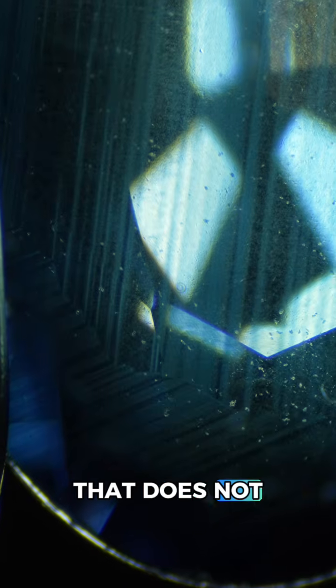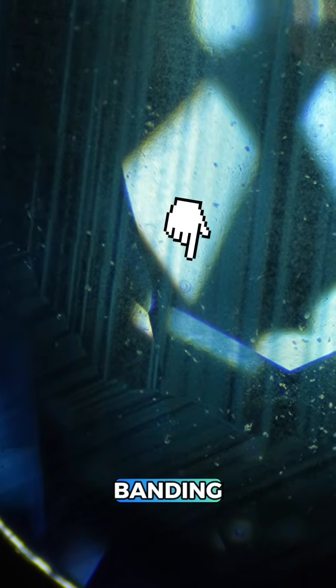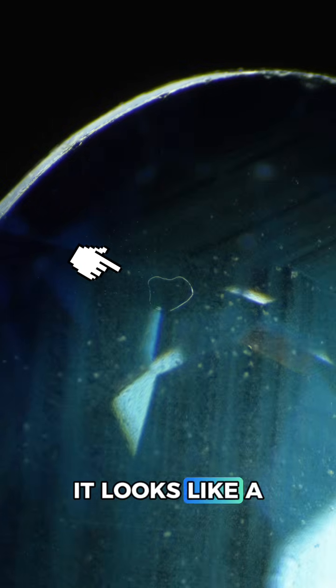But there's something here that does not belong. Can you see it? There's a lonely gas bubble hiding under the natural growth banding, something we don't find in natural sapphire. Over here I see something else that looks like a smashed bubble.